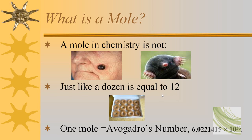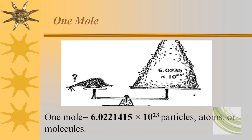First of all, what is a mole? A mole in chemistry is not like the mole that you find on someone's face or the mole that digs in the ground. It's just like a dozen is equal to 12 — well, one mole is always equal to 6.0221415 times 10 to the 23rd. So in chemistry, one mole is equal to 6.0221415 times 10 to the 23rd particles, atoms, or molecules.